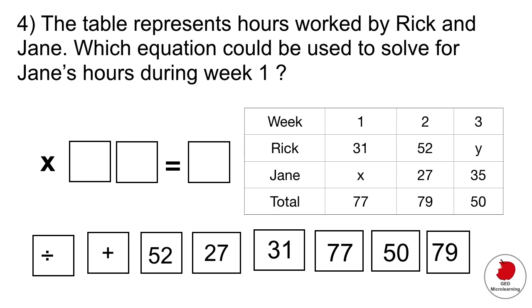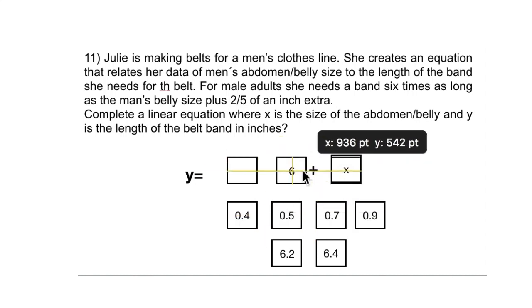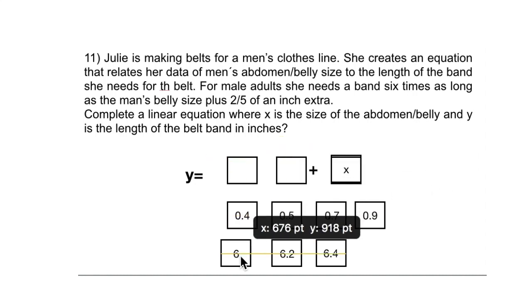This next type of question is what they call a drag and drop question. They will give you all the answer options at the bottom. You can see all those squares at the bottom are the answer options and you basically have to drag those little squares into the blank squares. You would click on it with your mouse and then drag it and deposit it wherever you have to. Usually it changes color to blue. If you make a mistake, just click on that square and put it back in its place.